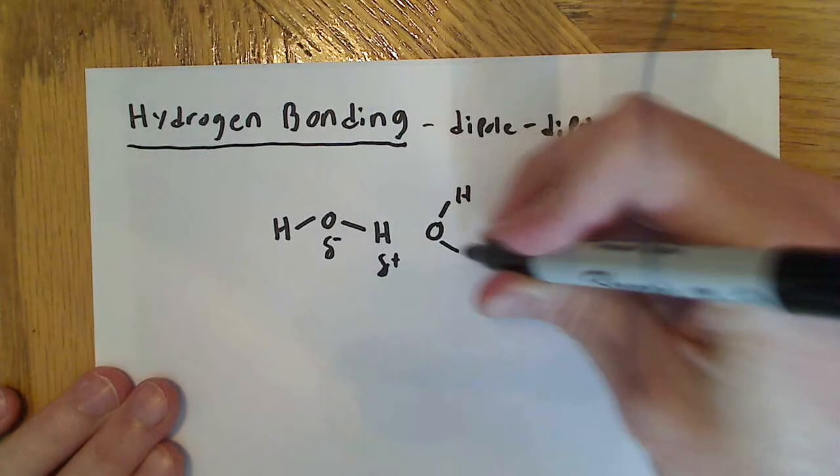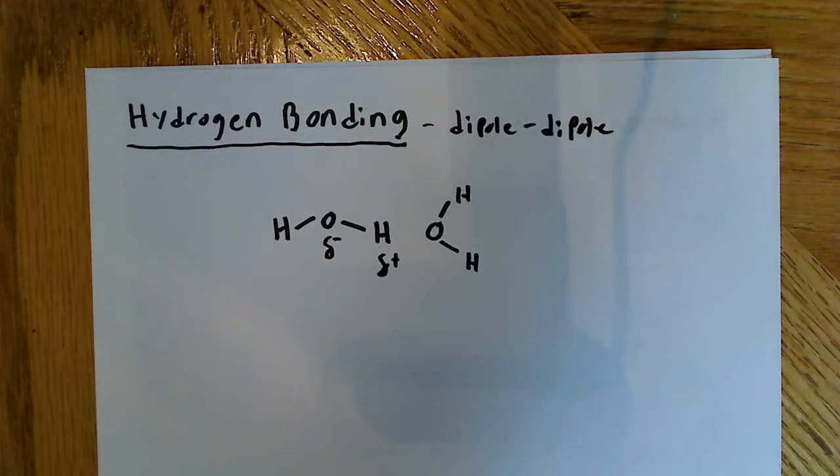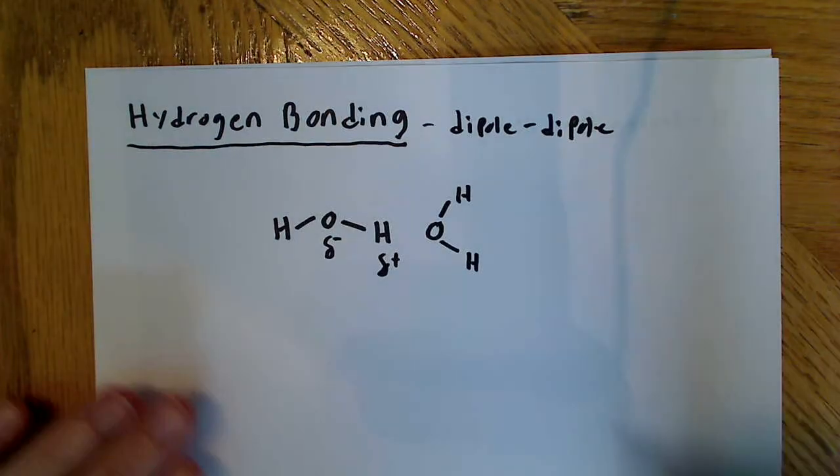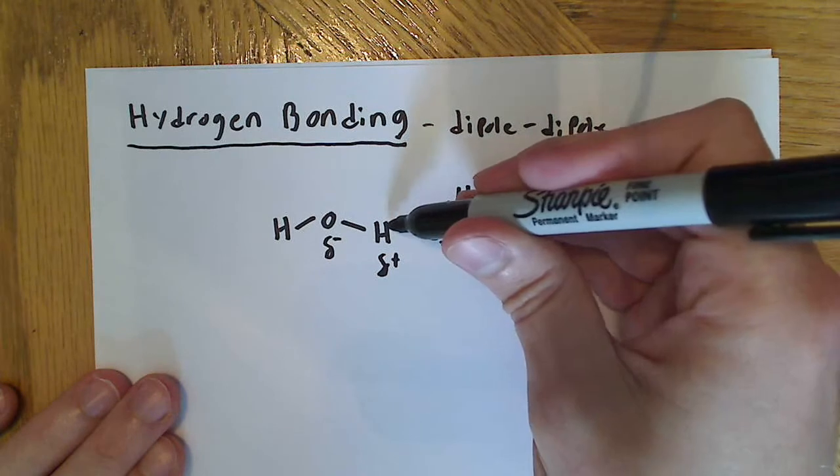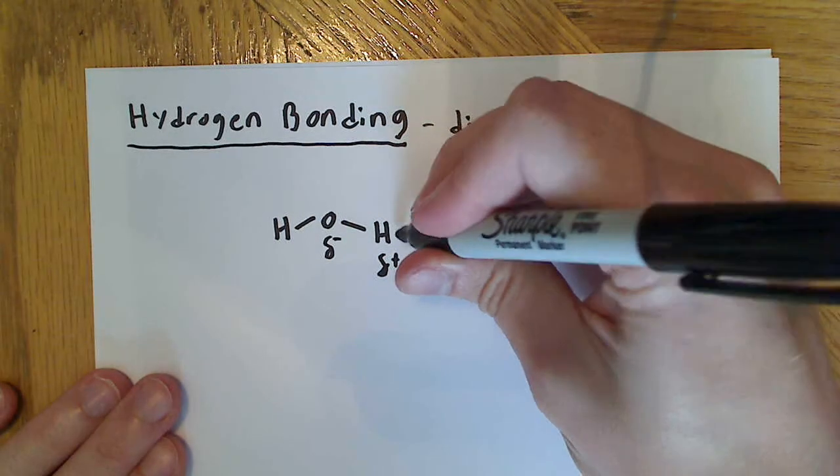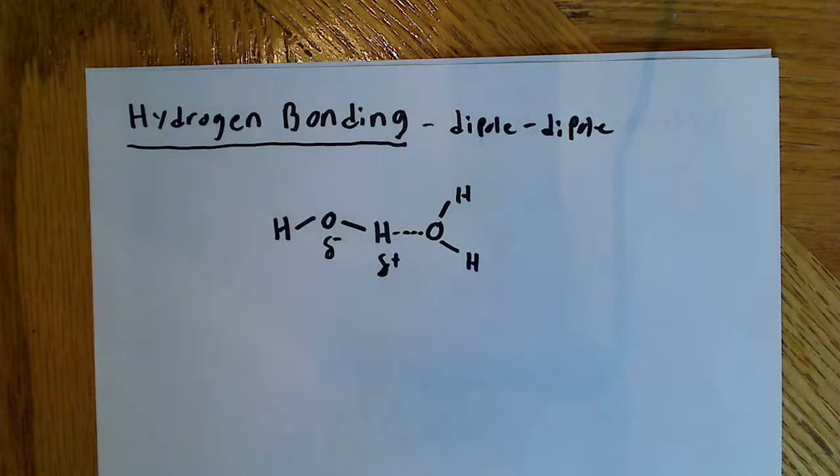which also has the same property. So, again, there's this difference in electronegativity here. This is partially negative. This is partially positive. And this is going to form a hydrogen bond, just like that.